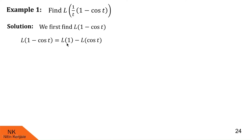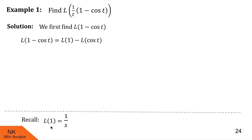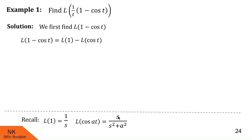Now let us recall Laplace of 1 and Laplace of cos(at). We know Laplace of 1 is 1/s — you can treat 1 as t raised to 0 and apply the formula for Laplace of t^n, or refer to a previous video on Laplace of constant functions. Laplace of cos(at) is s/(s² + a²). Here a = 1, so Laplace of cos t is s/(s² + 1). We consider this as φ(s).